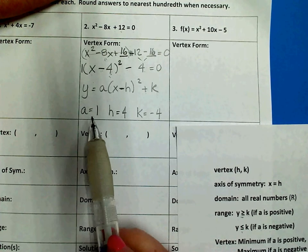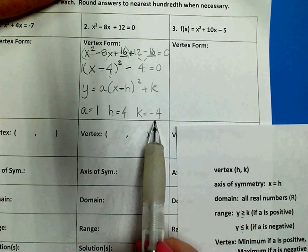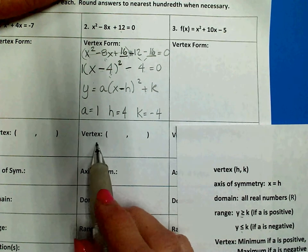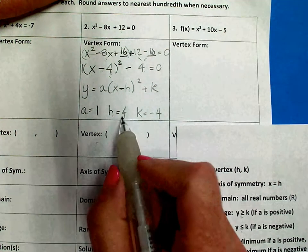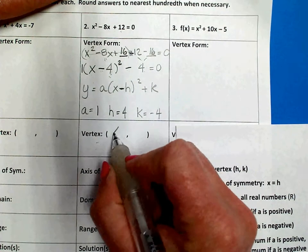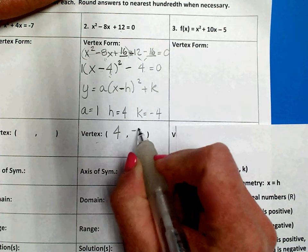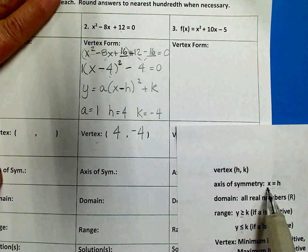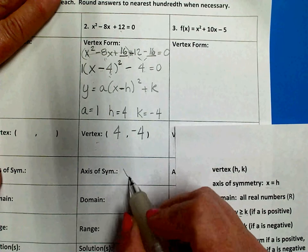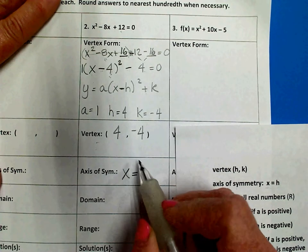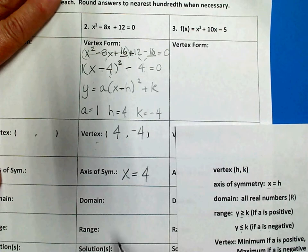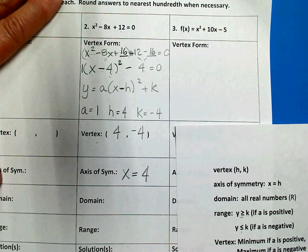Here are your values for a, h, and k that you'll use to answer these questions. Your vertex always happens at the ordered pair (h, k). So, this one has a vertex at (4, -4). Your axis of symmetry happens at x equals h. So, your axis of symmetry is at x equals positive 4. Make sure you include the x equals in this answer. It's wrong if you just put the axis of symmetry is 4.